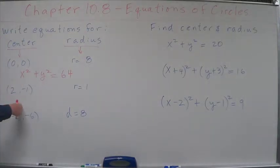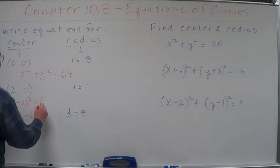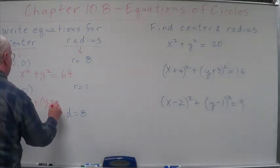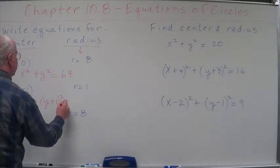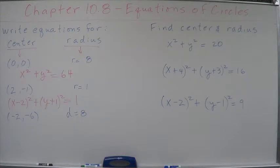X is 2. Center is 2, negative 1. Where's that going to be? Well, we subtract the center from the x. So we're going to go x minus 2 squared plus y plus 1 squared equals, what's 1 squared? 1.